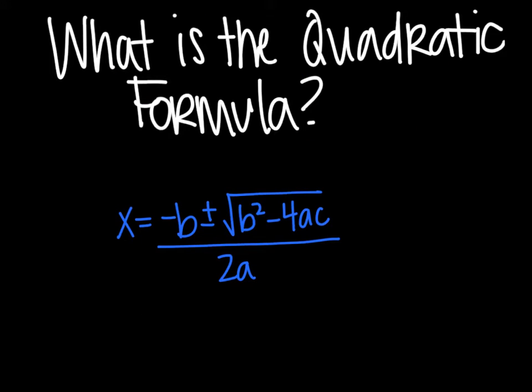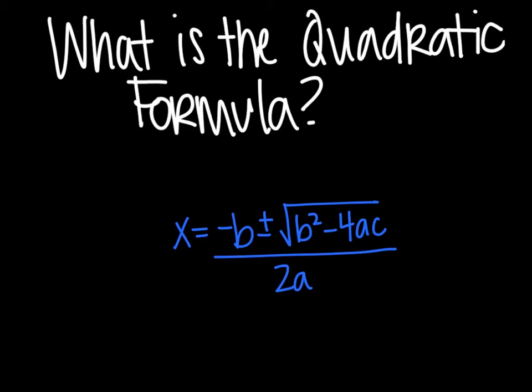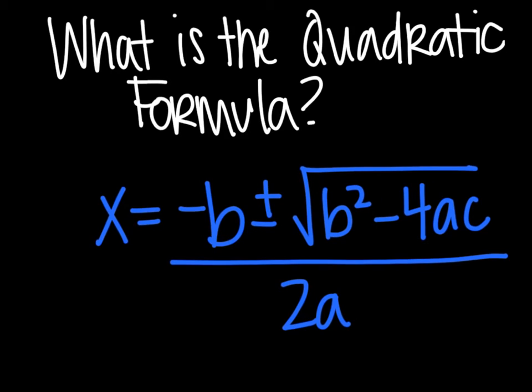The most important part of this video is knowing what the quadratic formula is. In order to solve for x or find your solutions, you are going to use x equals negative b plus or minus the square root of b squared minus 4ac all divided by 2a.